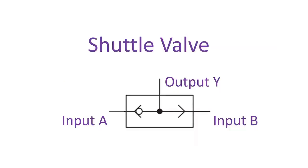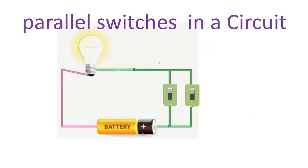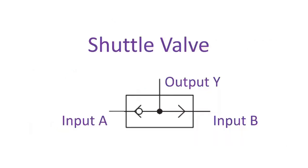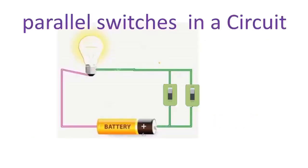And for shuttle valves, work on the same principle with parallel circuit and OR gate logic gates. The output of the shuttle valve is true if either of the two inputs are true. And for the parallel circuit, the bulb will glow if either of the two push buttons are pressed or two push buttons pressed together.